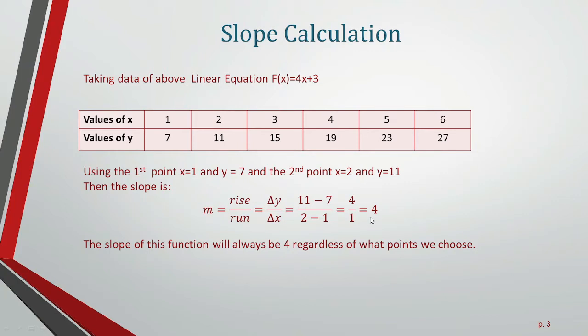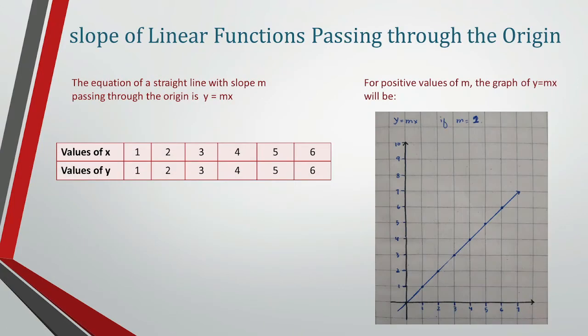The slope of this function will always be 4, regardless of what points you choose. You can choose any point from this table; the slope will be the same at every point.